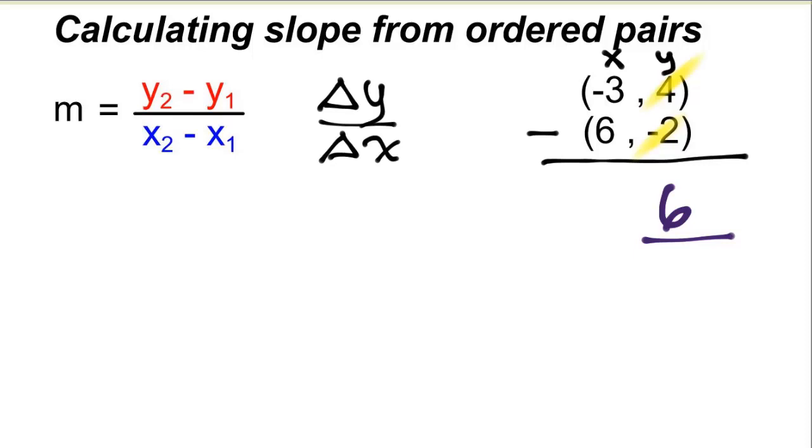And then I'm going to do top from bottom, negative 3 minus 6. And that's going to give me negative 9. And if I reduce that, I still get a two thirds.